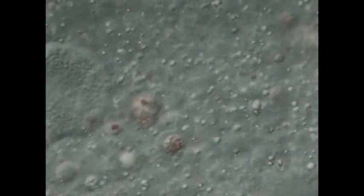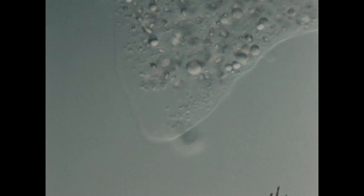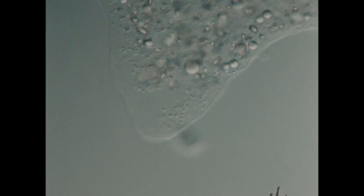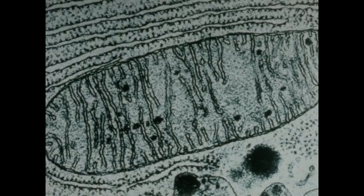Suspended in the cytosol are a great number of small bodies of various kinds called organelles. Identifying these organelles with the electron microscope and determining their functions has been one of the great achievements of cell biology. What looked like beans dancing about in the cytoplasm under the light microscope showed complex inner structure when examined with the electron microscope.